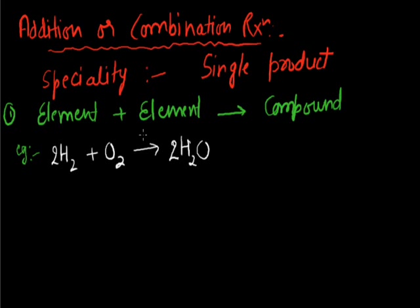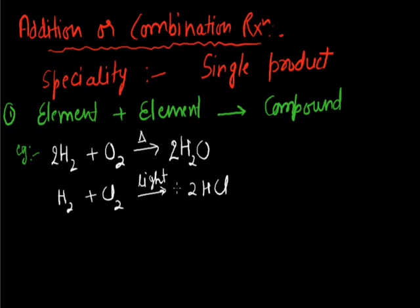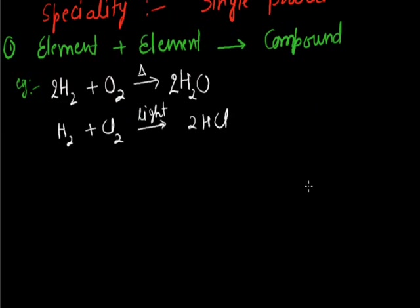Another example: H₂ plus Cl₂ forms 2HCl. This reaction takes place in the presence of light. Hydrogen is an element and chlorine is also an element, but hydrogen chloride is a compound because it has two types of atoms — hydrogen and chlorine. So this confirms element combined with element forms compound.